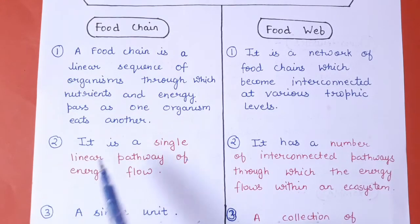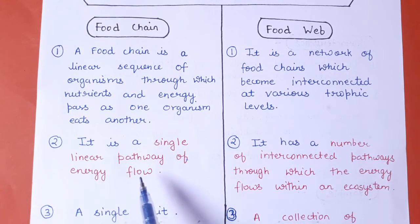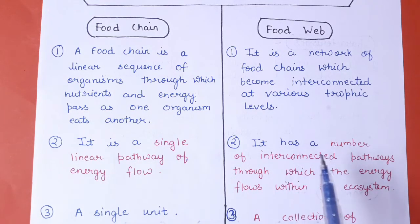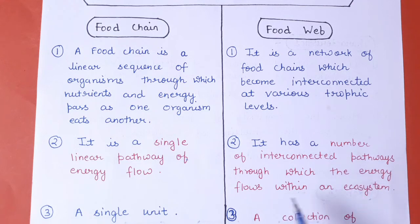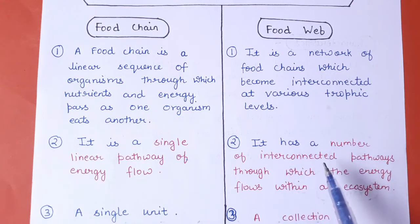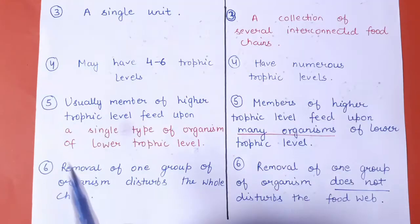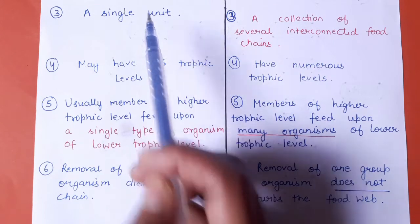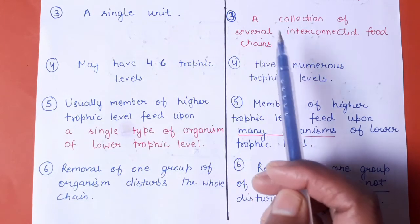The second point: a food chain is a single linear pathway of energy flow. A food web, on the other hand, has a number of interconnected pathways through which energy flows within an ecosystem. So a food chain is a single unit, while a food web contains many food chains.